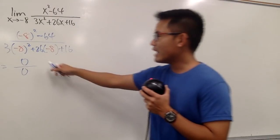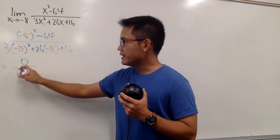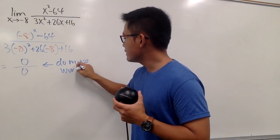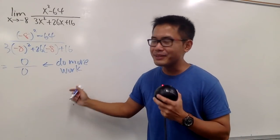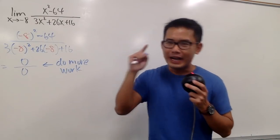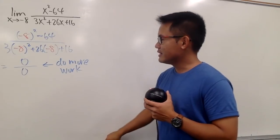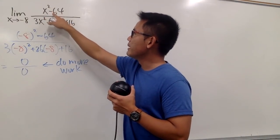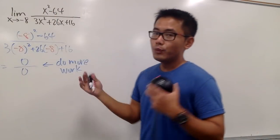When we have 0 over 0, we cannot draw any conclusion — this is just an indication that we have to do more work. This is not the answer; you have to figure out the correct answer. Notice on the top we have x squared minus 64, which is a difference of two squares, so we can factor it.